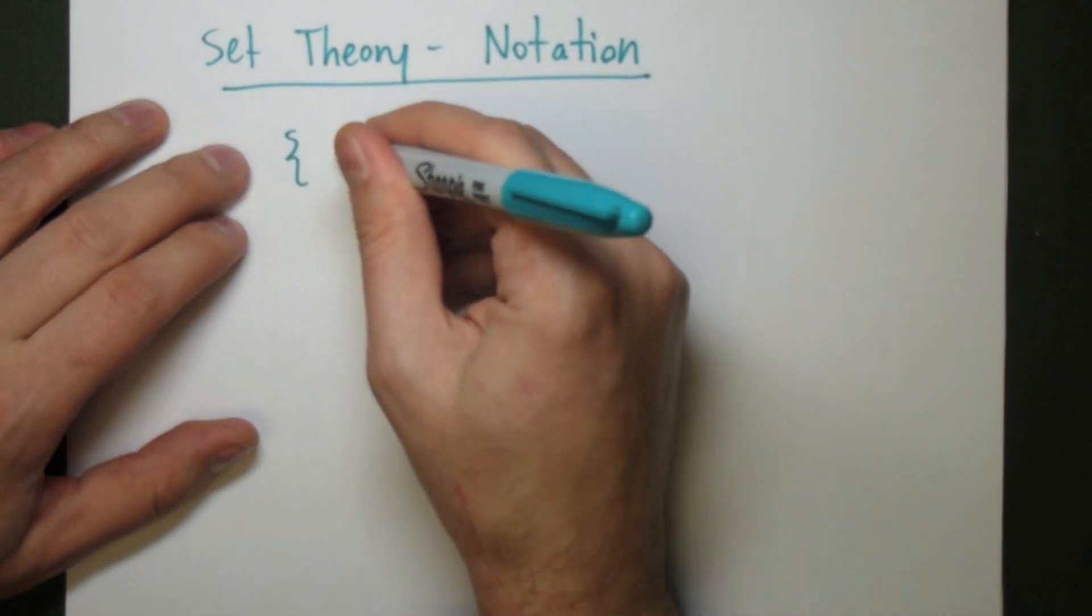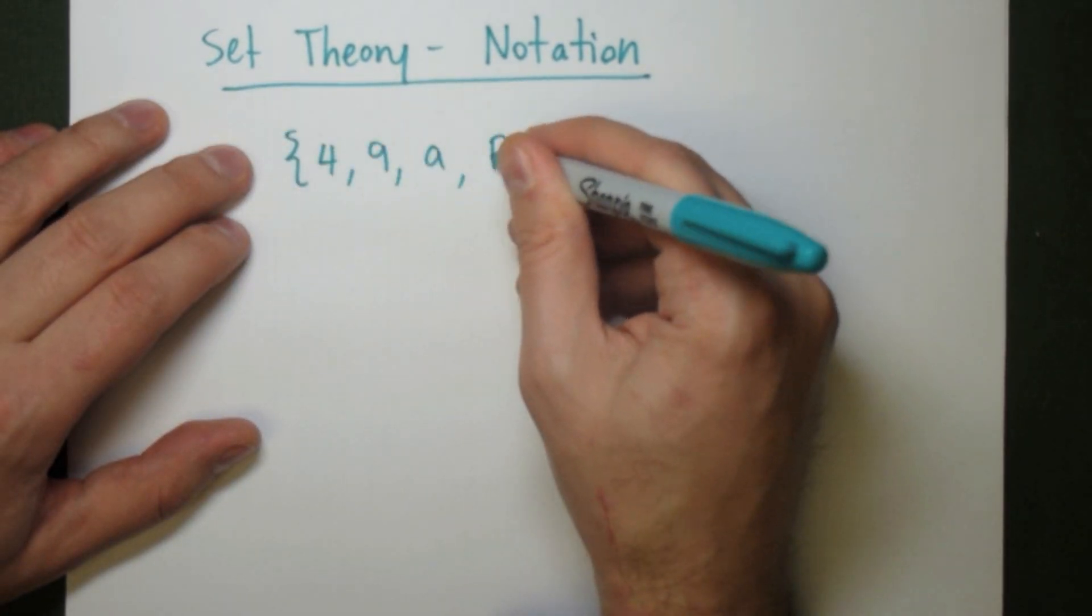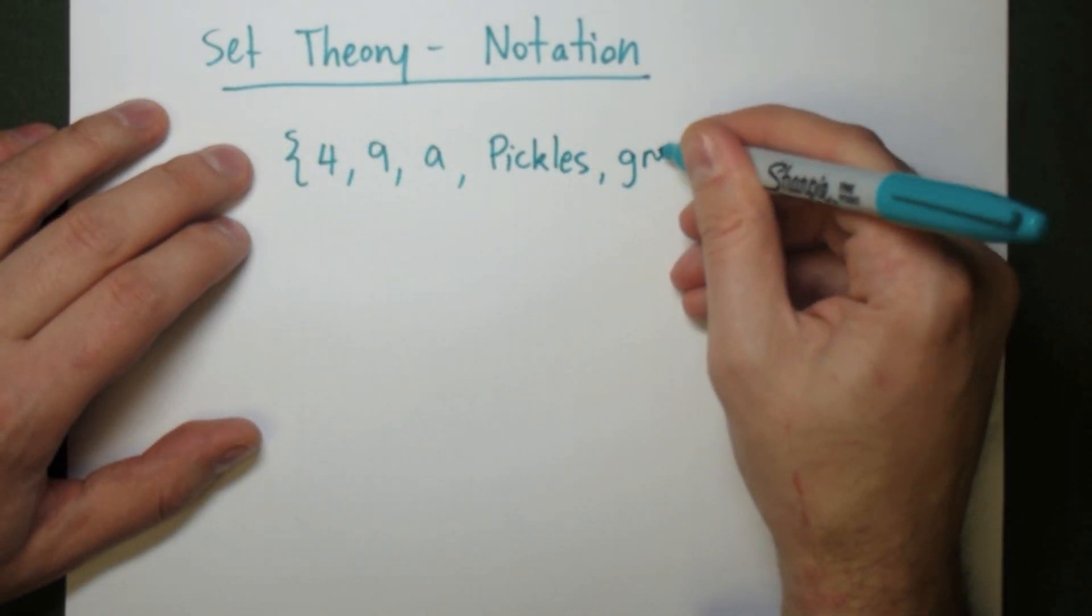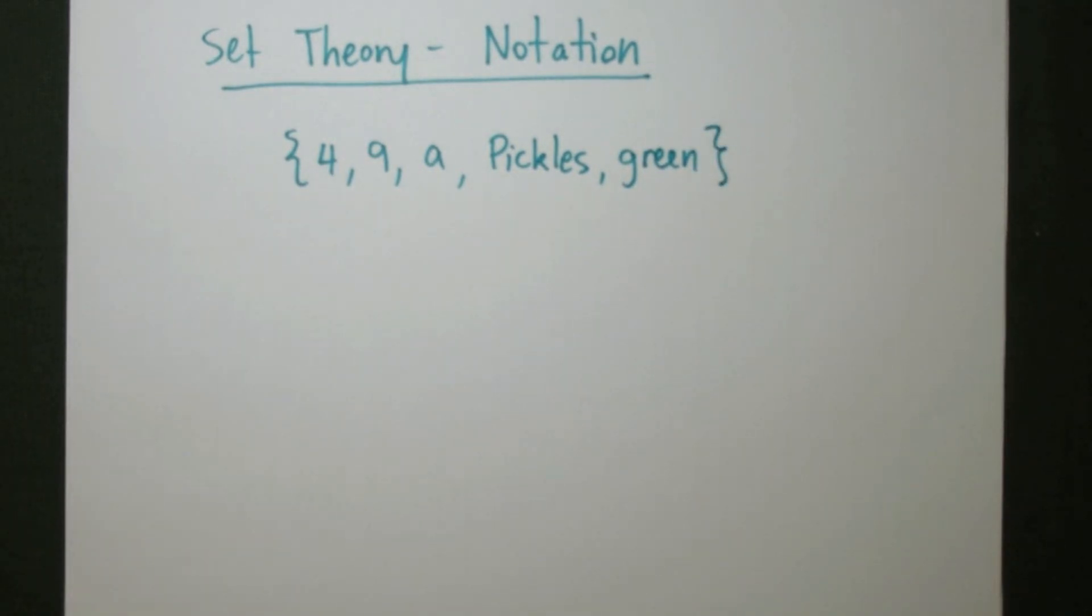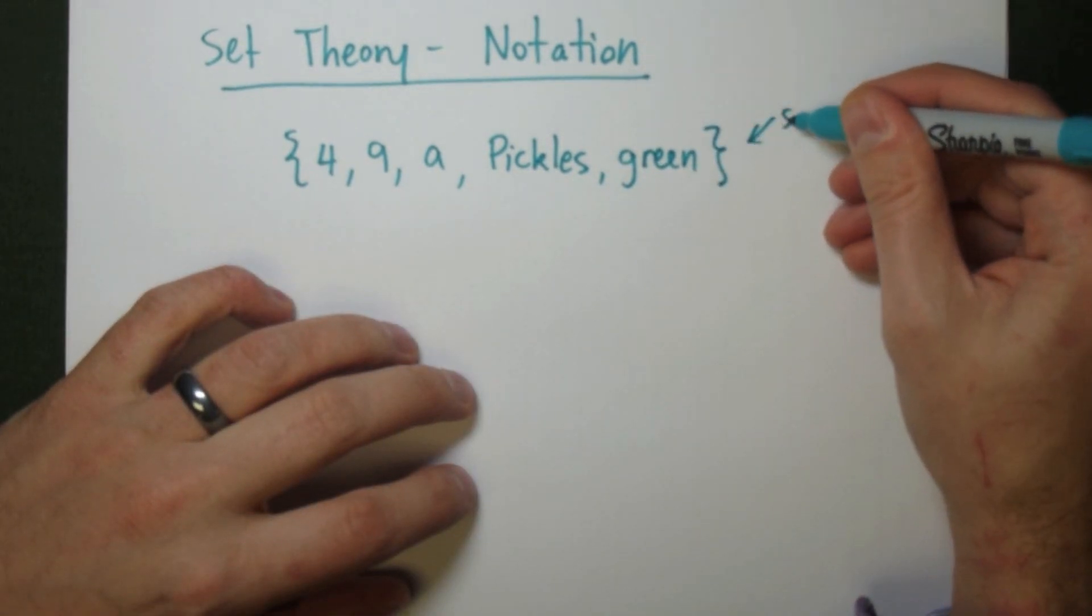A set is a collection of objects or ideas. In order to actually write down a set, we're going to list the elements, separate them by commas, and contain them inside a pair of curly braces.